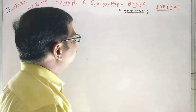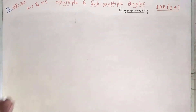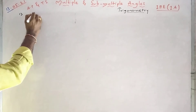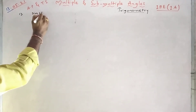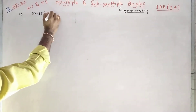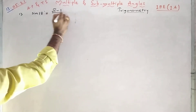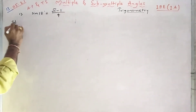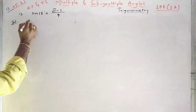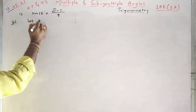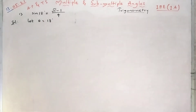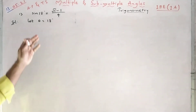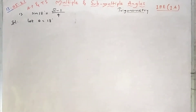Hello students, good evening everybody. We will prove that sin 18 degrees equals (√5 − 1)/4. Let us see the proof for this. Let theta equal to 18 degrees. To prove sin 18 degrees equal to root 5 minus 1 by 4.